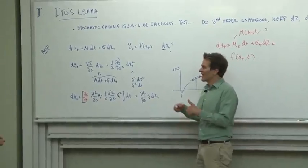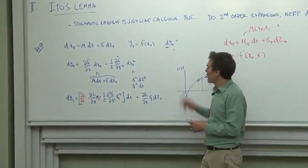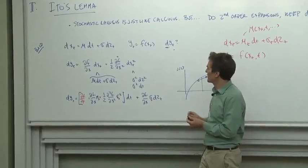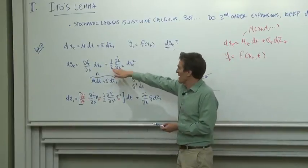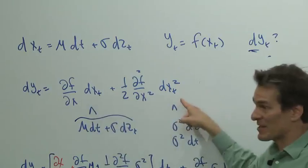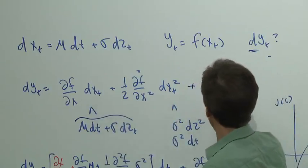Now, remember, in regular calculus, we just leave out the second and third order expansions. Why do we leave out higher ones here? Well, let's suppose we put them back in. This is just a Taylor expansion. So what you're suggesting is, let's go one more step.